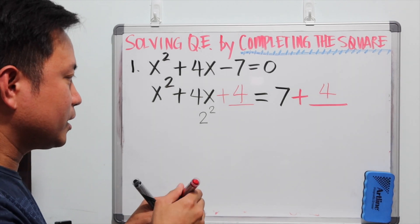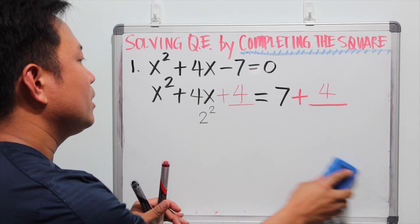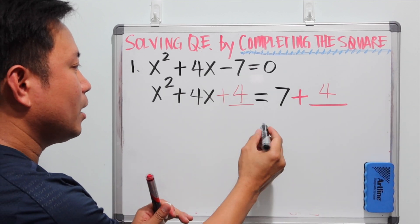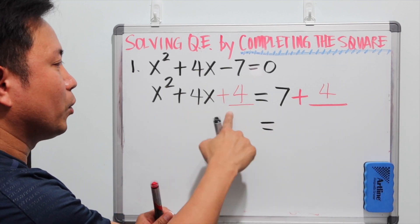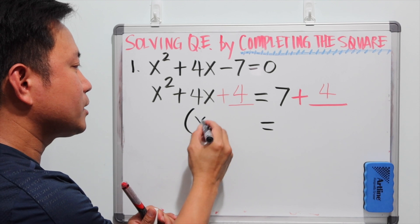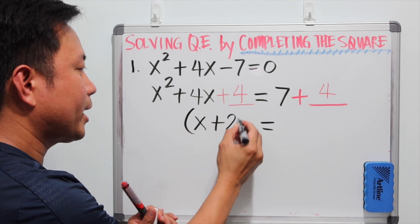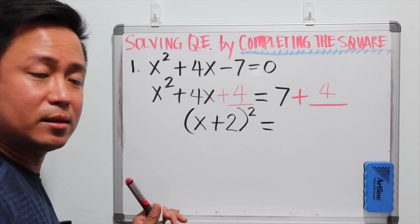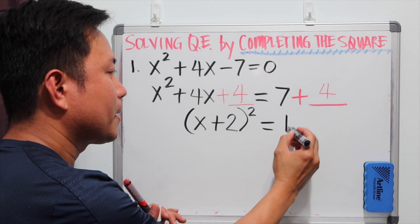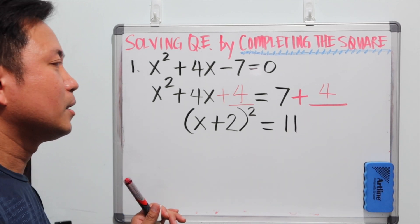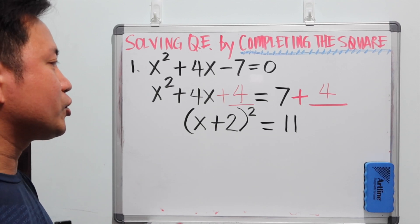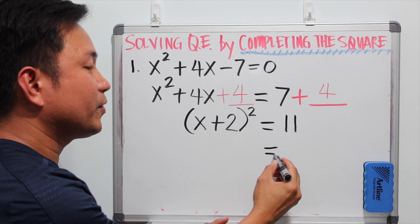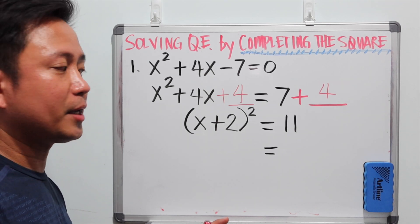Since the left side is a perfect square trinomial, x squared plus 4x plus 4 can be factored out as x plus 2 to the second power. The right side can be simplified as 11. Doing the inverse operation, since we have the square, that means we need to get the square root of both sides.